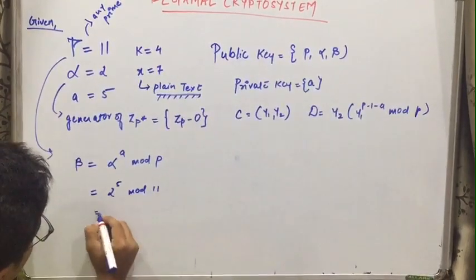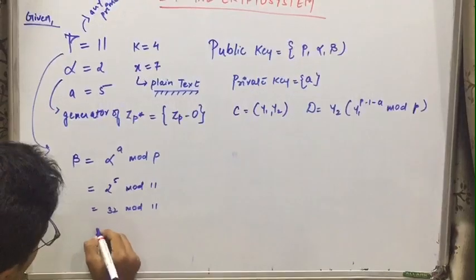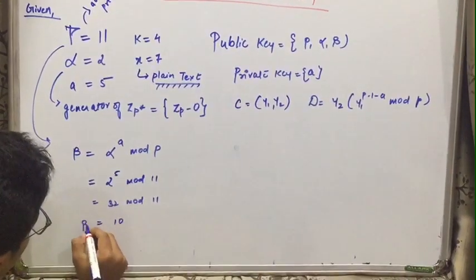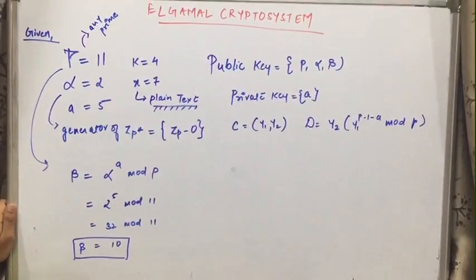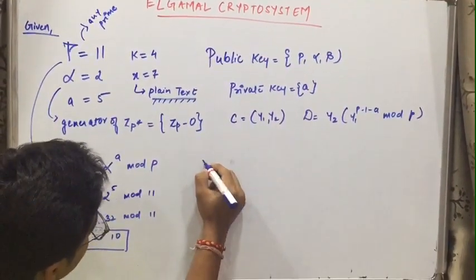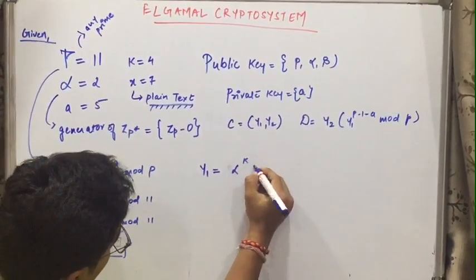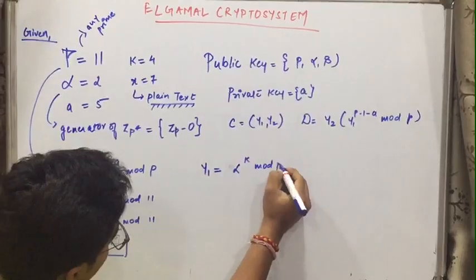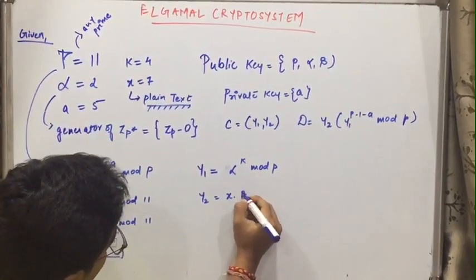And what is P? P is 11. So that will be 32 mod 11. So that will be 10. So we got beta as 10. Now for encryption we will be dividing into two parts that is y1 and y2. So what will be y1? We have y1 as alpha rest to k mod p and y2 as x into beta rest to k mod p.